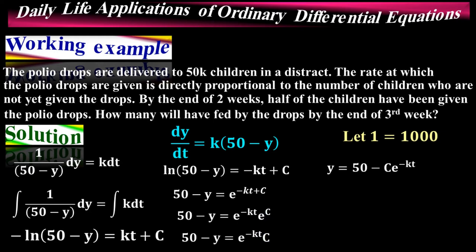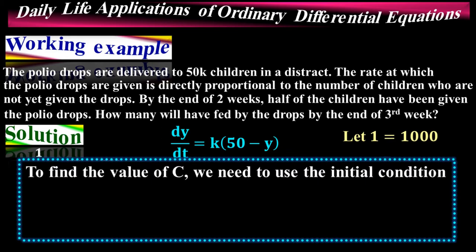Now we find the values of C and k. Using the initial condition y = 0 at t = 0: at time zero, no children have yet received the drops, so y = 0. Substituting into y = 50 − C·e^(−kt) gives 0 = 50 − C, therefore C = 50.